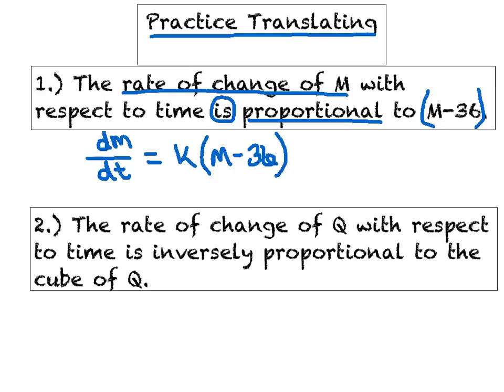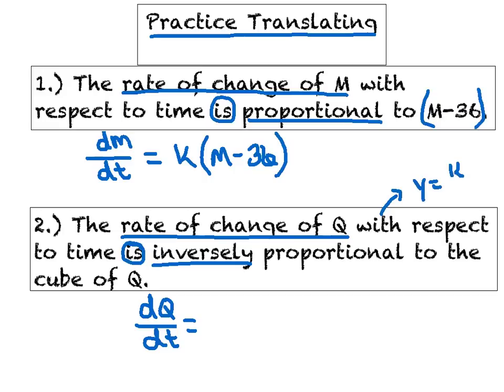Number two, I've got just a little bear trap waiting for you here. We're talking about the rate of change of Q, so there's my dQ/dT. Here's the bear trap: inversely proportional. Instead of multiplying by K, it's going to be K divided by this quantity. Back in Algebra 2, when we first introduced the idea of inverse proportions, we said the general form was Y equals K divided by X. So we're going to say this is K divided by, in this case, the cube of Q, Q raised to the third power.